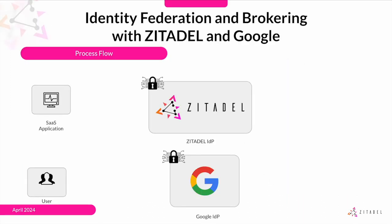Let's now look at the process flow of identity federation and brokering, focusing on how Citadel and Google interact using the OpenID Connect protocol. First, the user initiates login, for example by clicking a link or a button that requires the user to first log in in order to proceed.